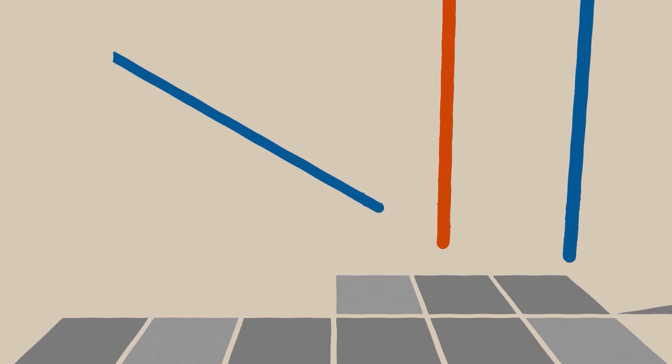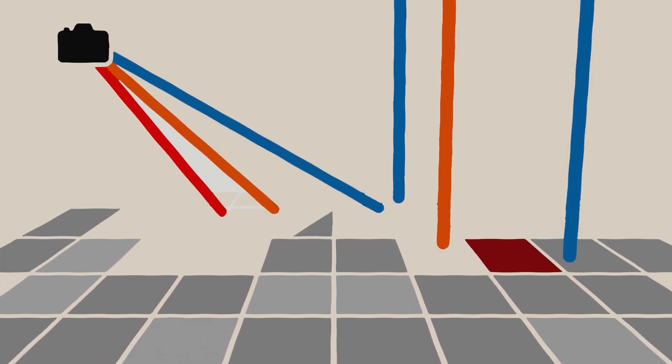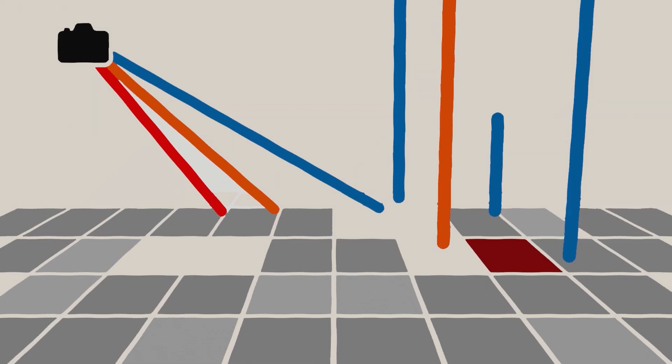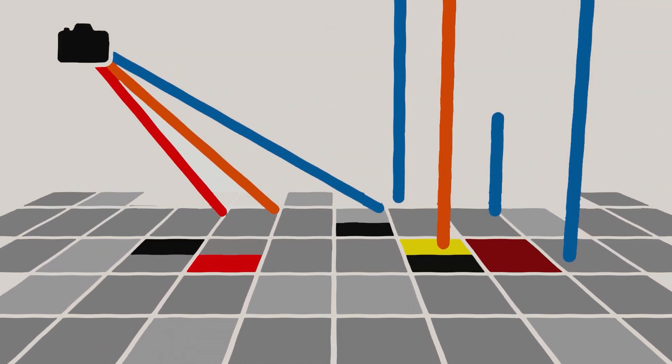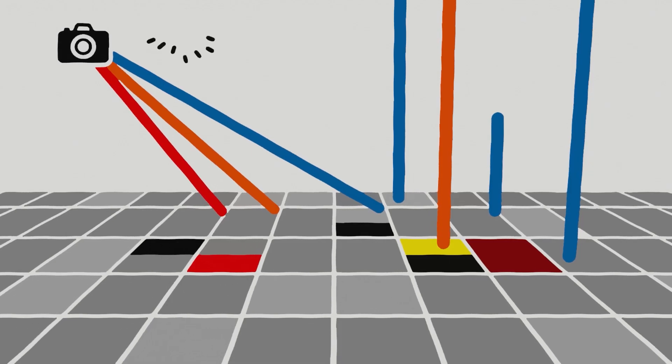Now let's talk about exactly how Cycles uses this. Every single pixel in your render is an estimate of how much light reaches the camera. Cycles doesn't know the answer. It doesn't know the important parts. It doesn't know which rays matter. So for every pixel, Cycles sends out random rays.